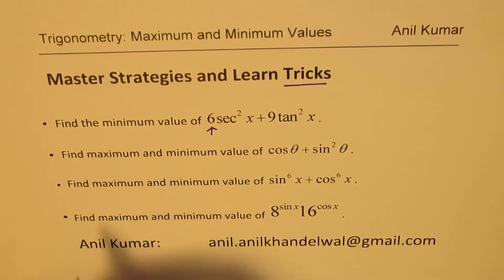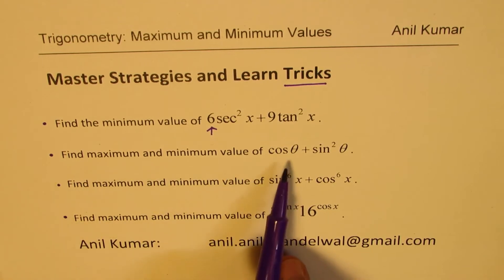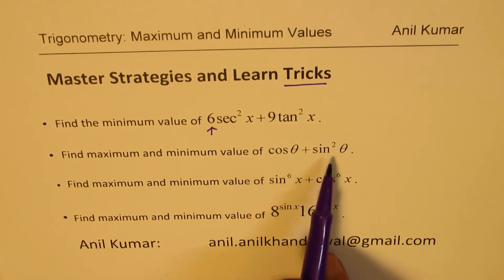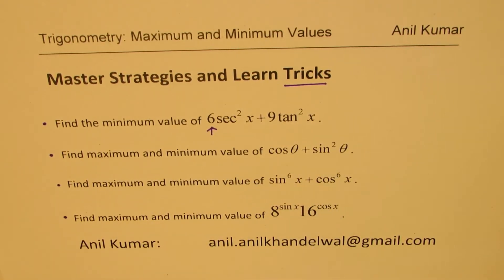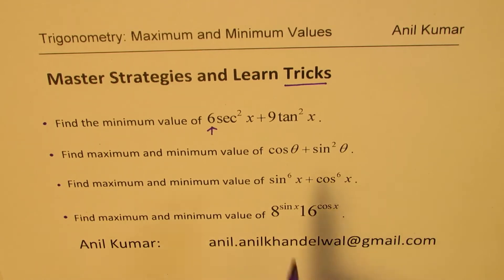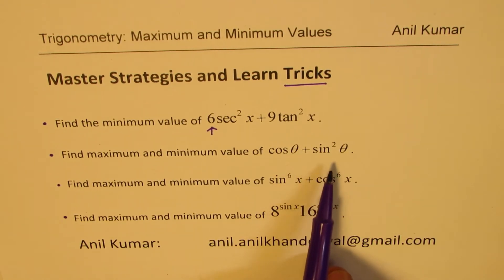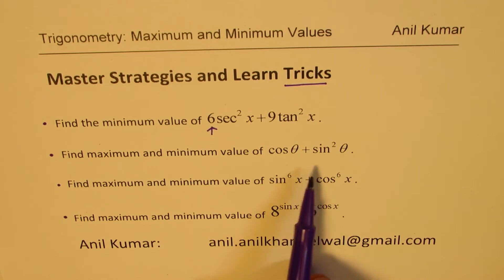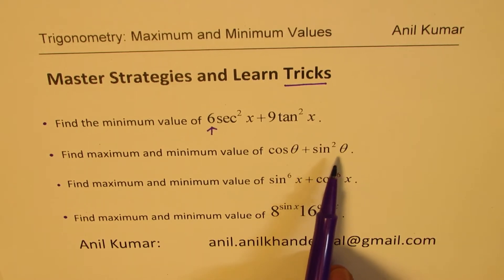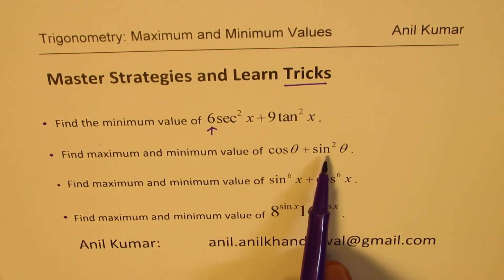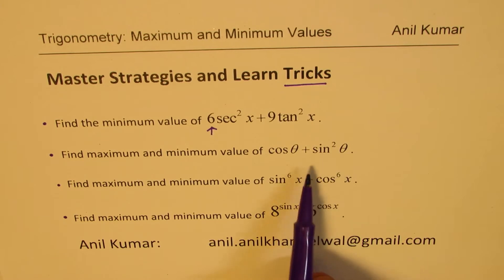Question number two is to find the maximum and minimum value of cos theta plus sine squared theta. In this particular case, it is a lengthy calculation. I'd like you to concentrate on the method used — the idea is to get the equation into quadratic form, from which you can easily find the maximum and minimum value.